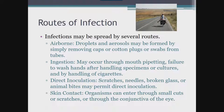Understanding how you can be infected within the laboratory helps you understand how infection controls can be effective to ensure your safety. Infections may be spread by four main routes, with the actual occurrence depending on the virulence of the infecting agent and the susceptibility of the host. The first route is airborne, where droplets and aerosols may be formed by simply removing caps or cotton plugs from tubes; breakage in centrifuges can also cause serious concern. The second route is ingestion, through mouth pipetting, failure to wash hands, or handling cigarettes. The third is direct inoculation caused by scratches, needles, or broken glass. The fourth is skin contact, where organisms can enter through small cuts or scratches or through the conjunctiva of the eye.